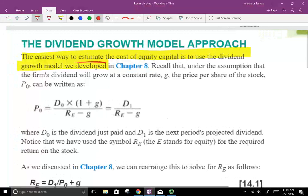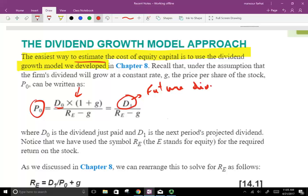So what is the dividend growth model? If you remember, the price of the stock P0 equals the current dividend times one plus the growth rate. Basically, the numerator goes to D1, which is the future dividend, divided by R minus G. Hopefully you remember this. D0 is the dividend just paid, D1 is the next period's projected dividend. Notice that we have to use R_E - the E stands for equity. This is the required return on stock, so how much do you want to earn on the stock?